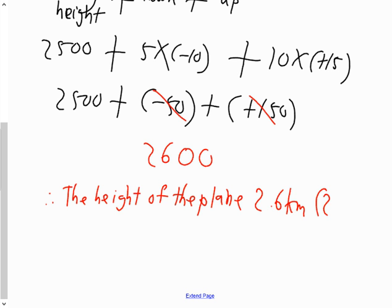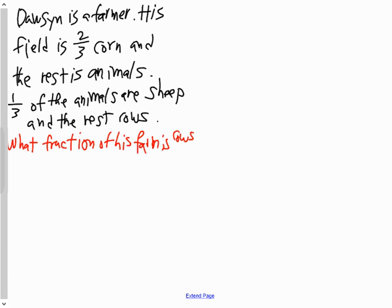Okay, any questions on that one? And our second question in our warm-up here on this beautiful Tuesday morning says: Dawson is a farmer. His field is two-thirds corn and the rest is animals. One-third of the animals are sheep and the rest are cows. What fraction of his farm is cows?